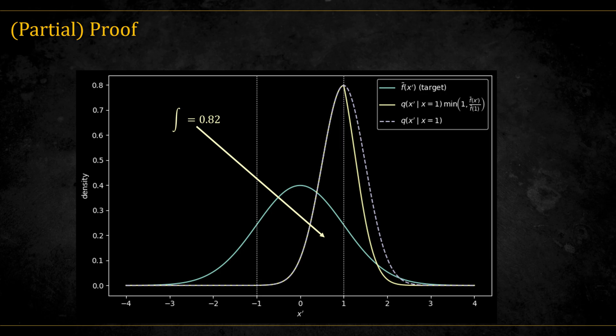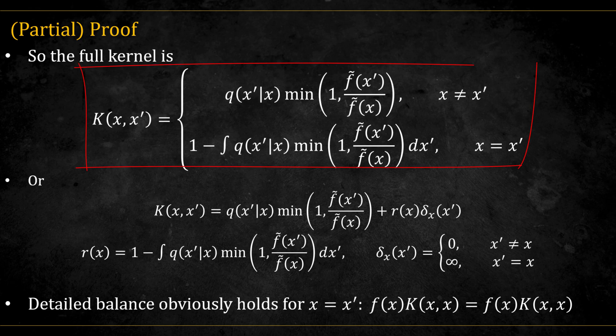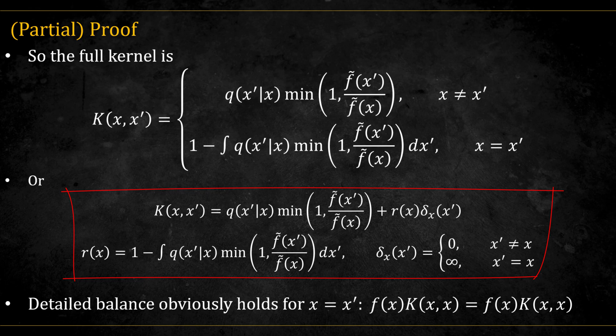This means that the probability of not moving and staying in place is about 0.18. That is, we always have an atom of probability at the point where we are currently at, that we reject the move. So the full kernel is actually equal to this, or in other notation, this, where delta is the Dirac delta function. But this isn't too problematic, because obviously detailed balance holds for the case when x is equal to x prime.